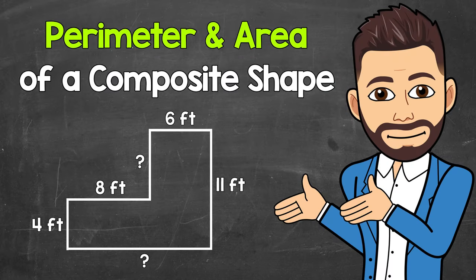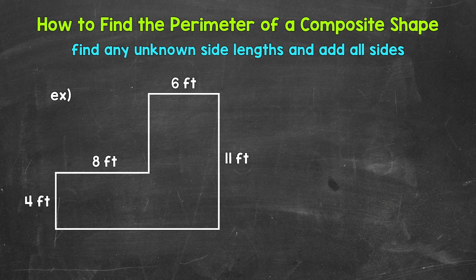Welcome to Math with Mr. J. In this video, I'm going to cover how to find the perimeter and area of a composite shape. For our example, we will be working with an L-shaped figure. Let's start by finding the perimeter, and then we will move on to finding the area.